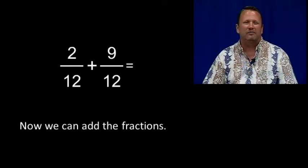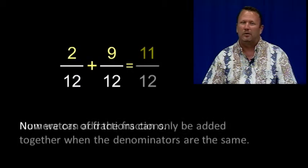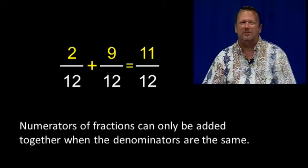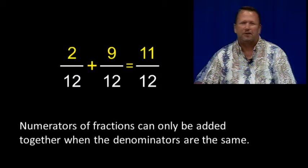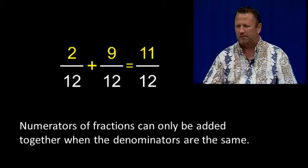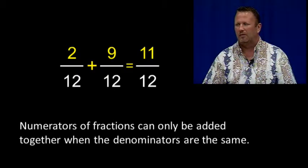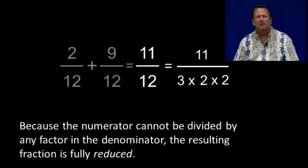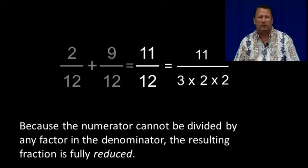Now we can add the fractions together. Remember, numerators of fractions can only be added together when the denominators are the same. 2 over 12 plus 9 over 12 is equal to 11 over 12. Because the numerator is a prime number and cannot be divided by any factor in the denominator, the resulting fraction 11 over 12 is fully reduced.